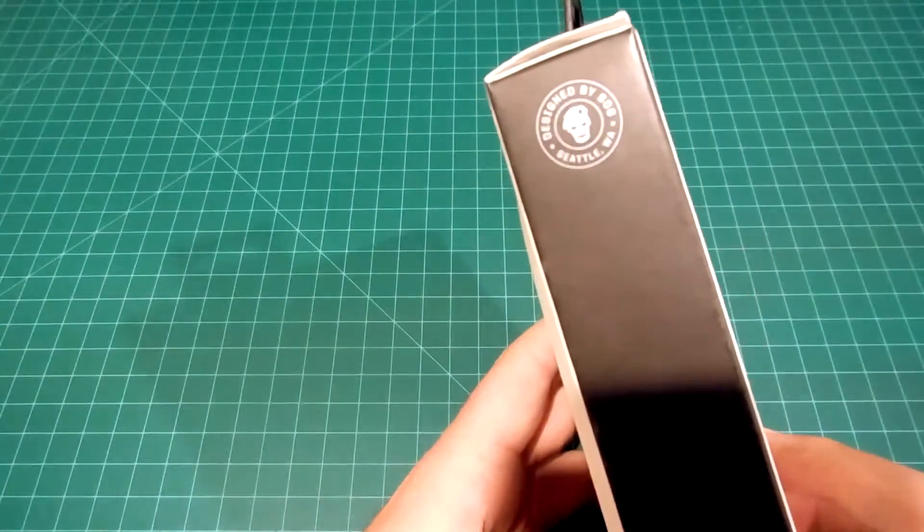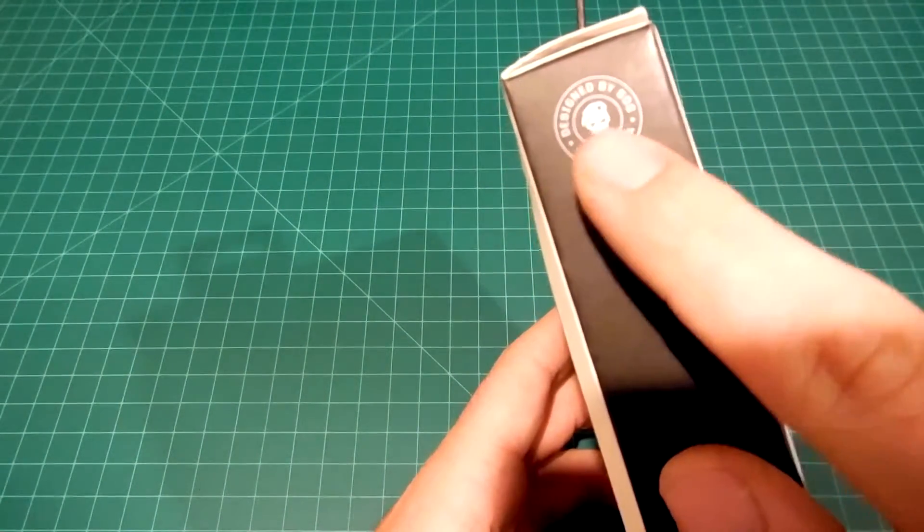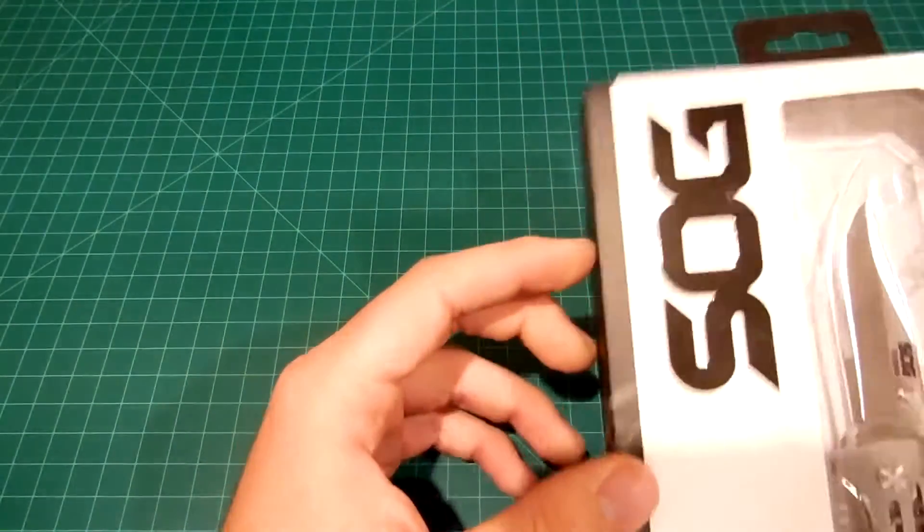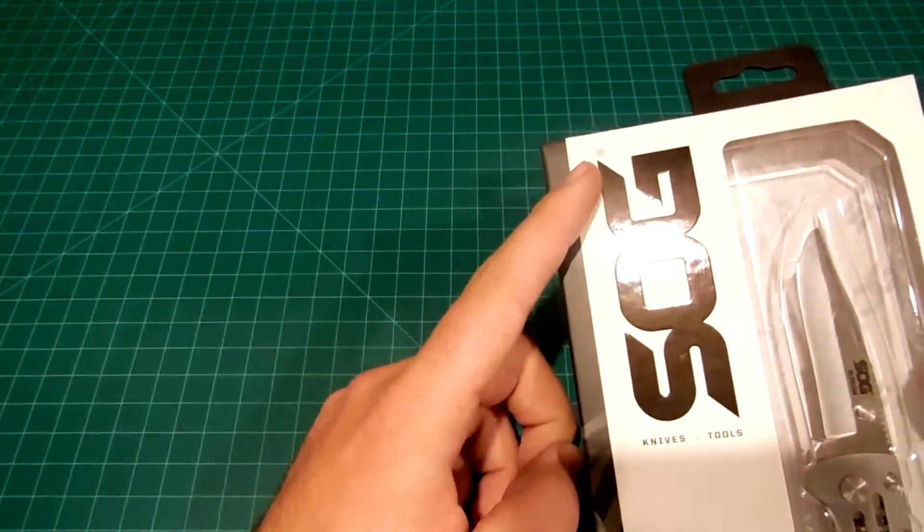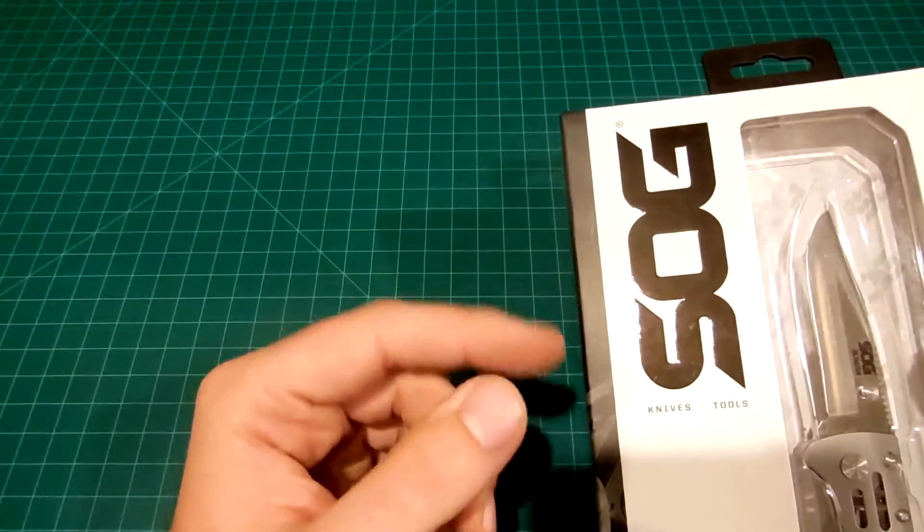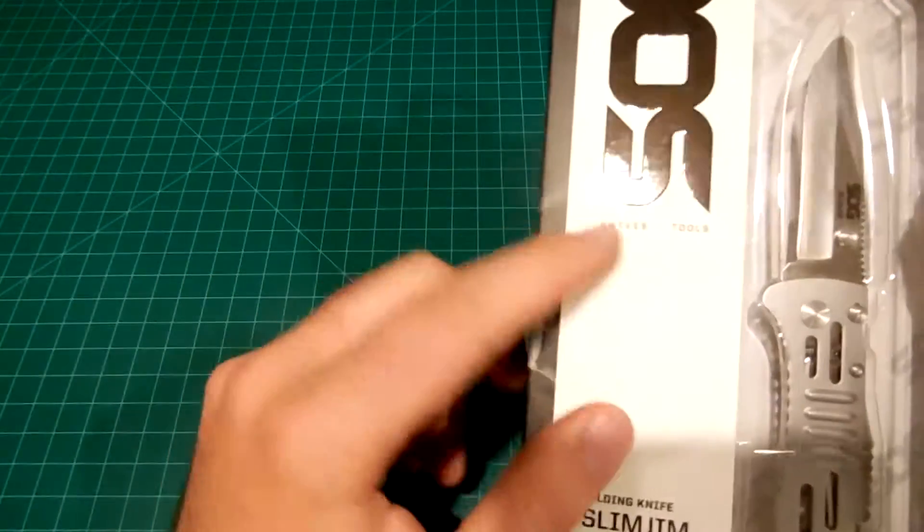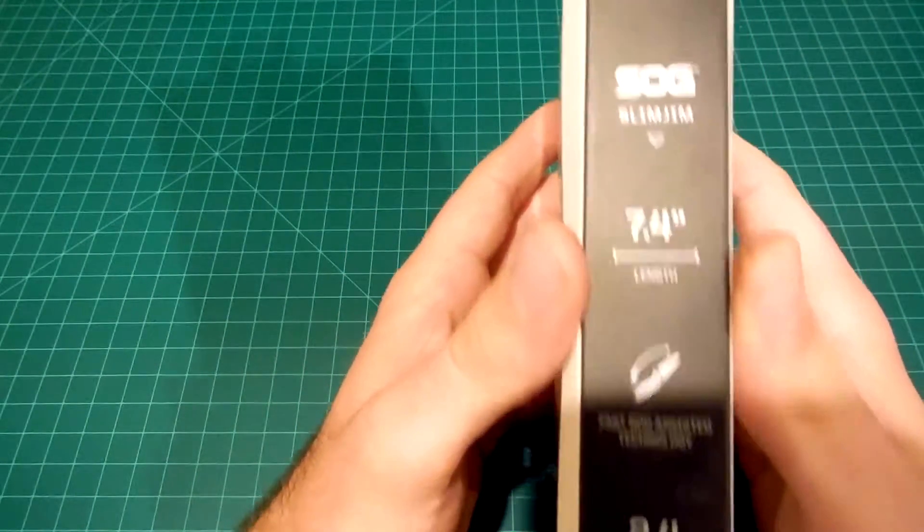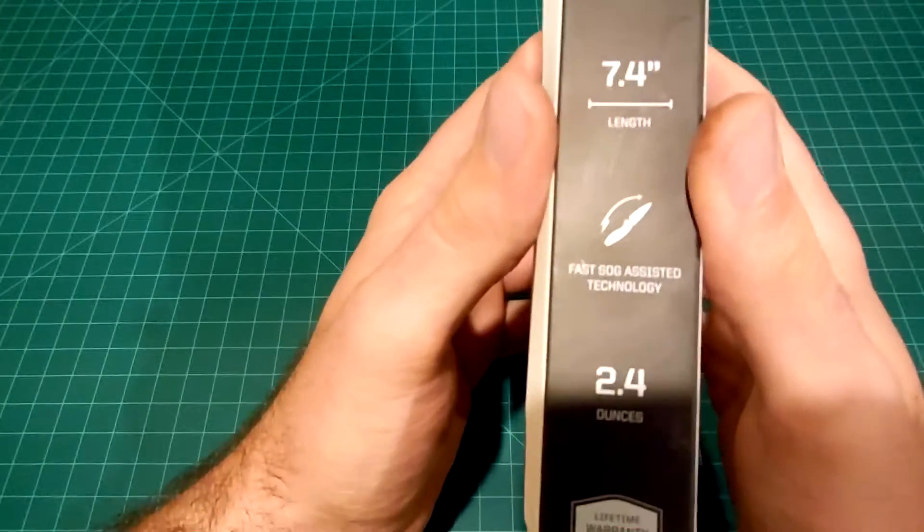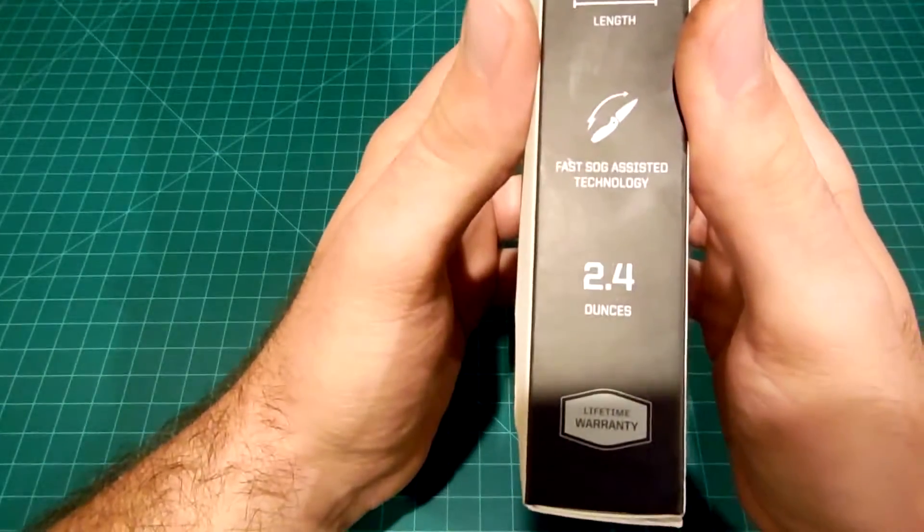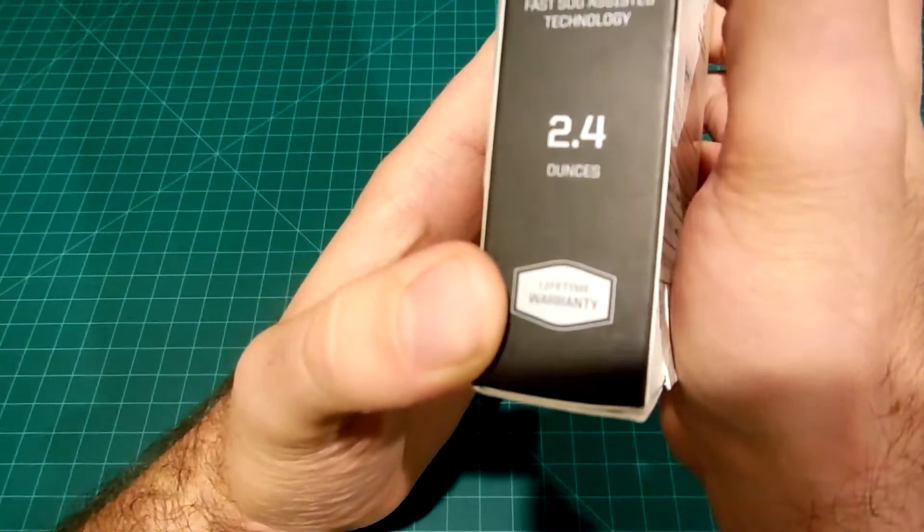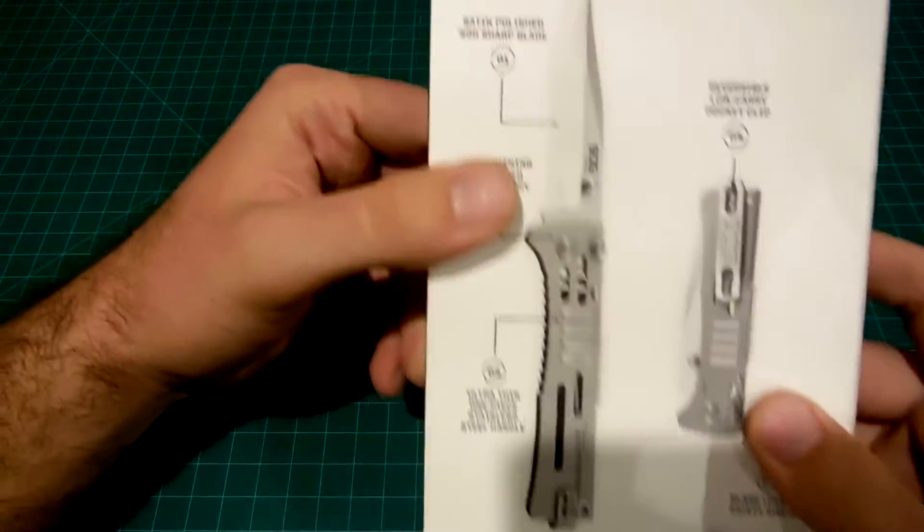On this side we have SOG, designed by SOG Seattle Washington. SOG I believe stands for Special Operations Group. They make knives and tools. On the top, SOG Slim Jim, the length, fast assisted technology, only 2.4 ounces and lifetime warranty.